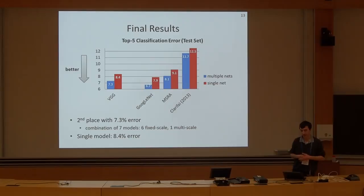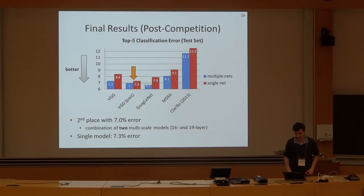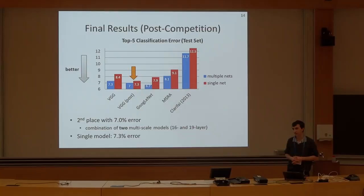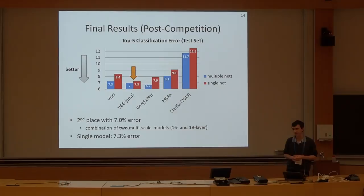These are the final results on the test set. We secured second place. At submission time, our best performance was 7.3% error achieved using a combination of seven networks. After additional experiments post-submission, error decreased to 7%, remarkably achieved using just two networks. Other contestants used up to seven networks for substantial improvements, so it is entirely possible we can further improve our 7% by using more networks. In terms of single-network performance, we achieve 7.3% error, which is 0.6% better than what was reported earlier today by GoogLeNet.